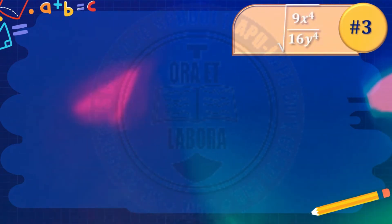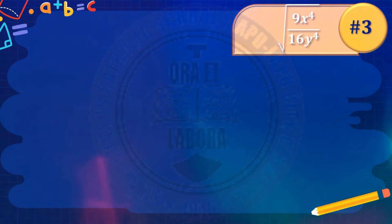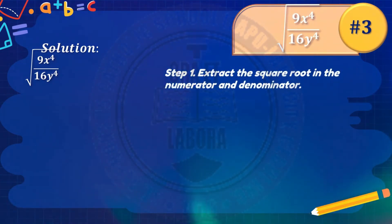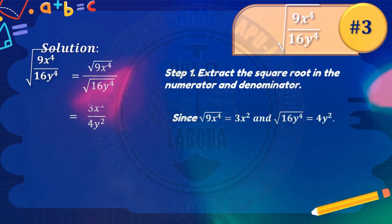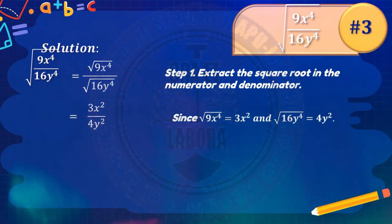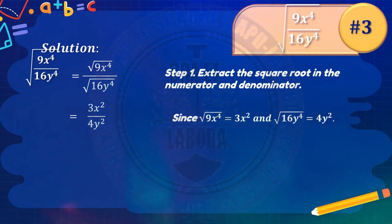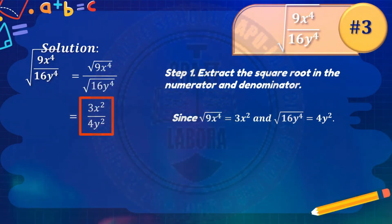Number 3: the square root of 9x raised to 4 over 16y raised to 4. Since we cannot divide this expression, separate the extraction of the square root in the numerator and denominator. The square root of 9x raised to 4 is 3x squared for the numerator, and the square root of 16y raised to 4 is 4y squared for the denominator. Since this cannot be simplified further, the final answer is 3x squared over 4y squared.